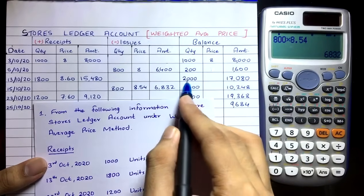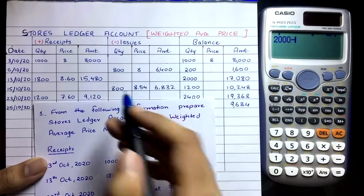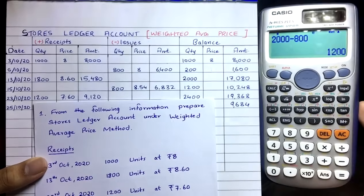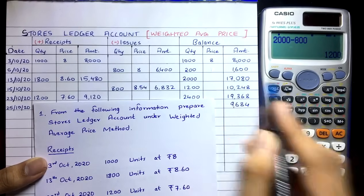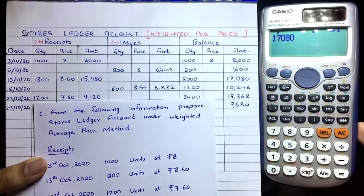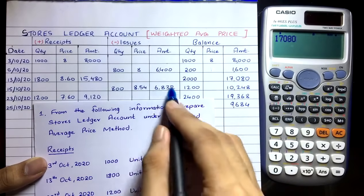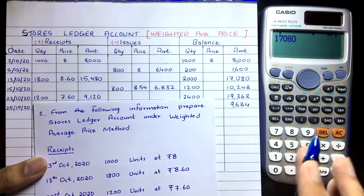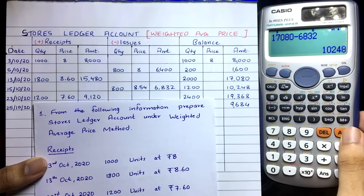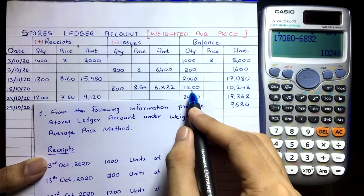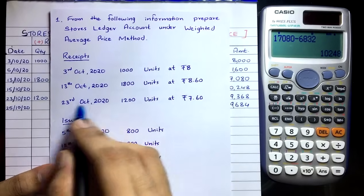Update the balance: 2,000 − 800 = 1,200 quantity remaining. Cost: ₹17,080 − ₹6,832 = ₹10,248. New balance is 1,200 quantity costing ₹10,248.